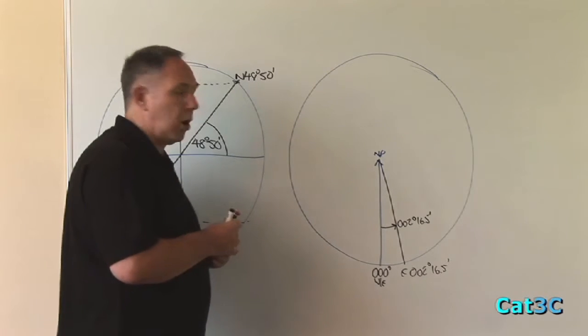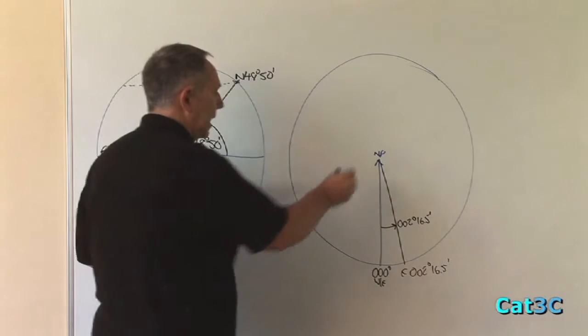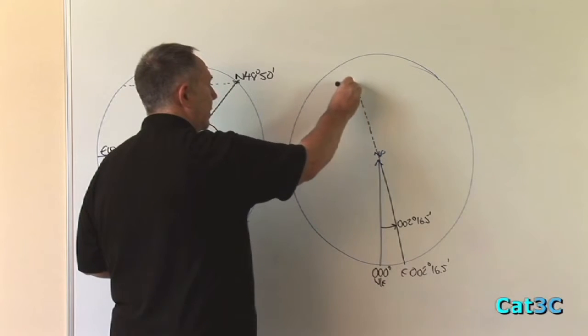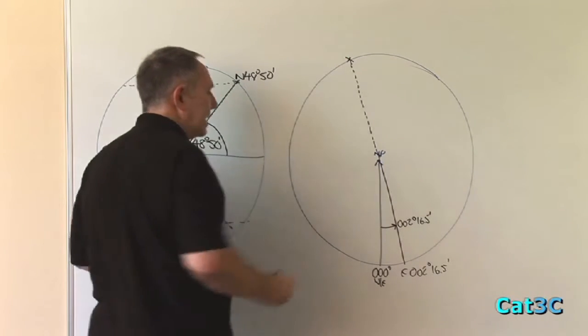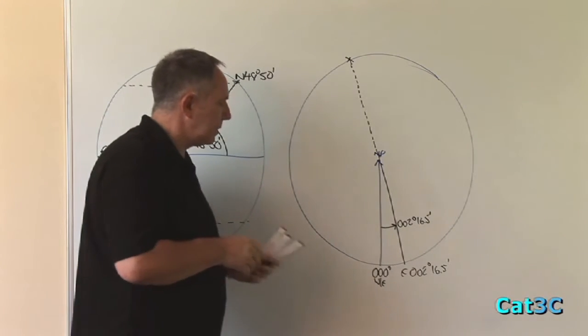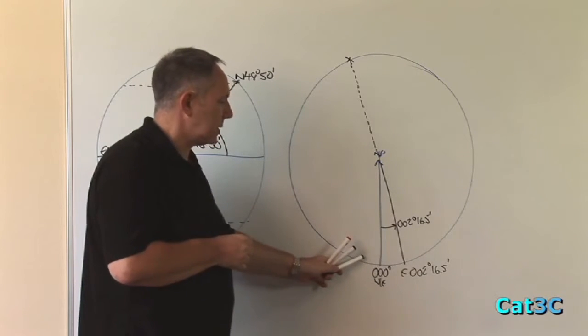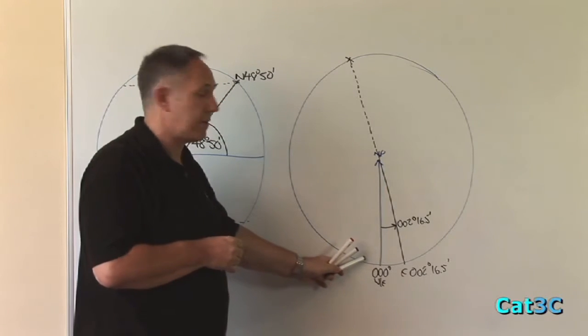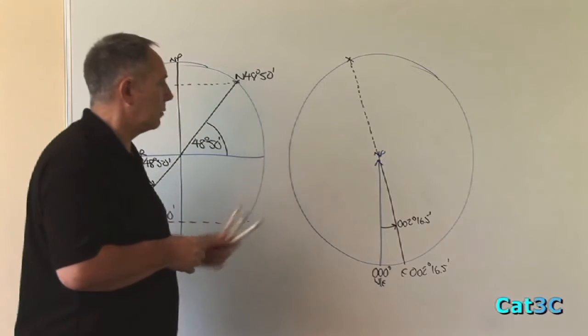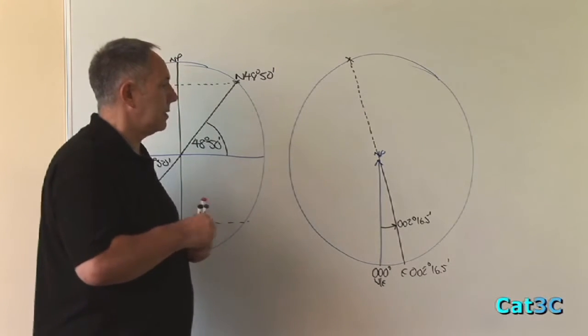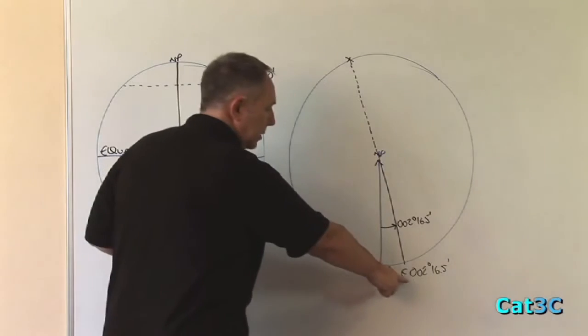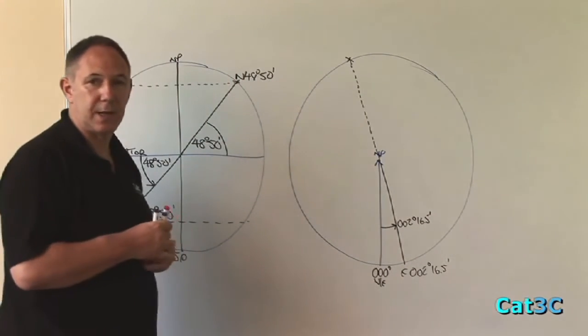To find the opposite meridian, again, we simply take the line straight through. But as we can see, it is not a simple case of just measuring 2 degrees 16.5 minutes in the opposite direction. What we have to do now to calculate the opposite meridian is to subtract the known meridian from 180 degrees.